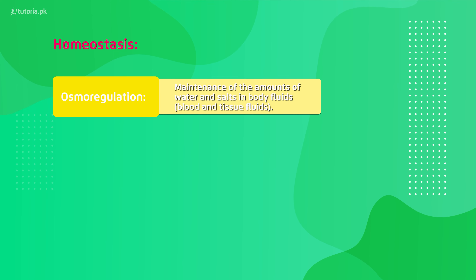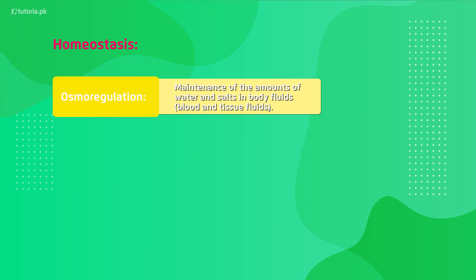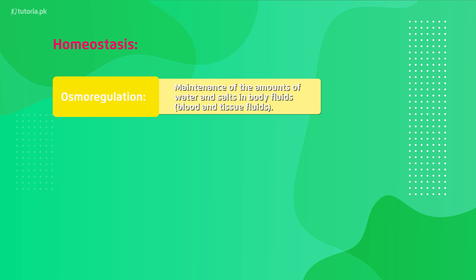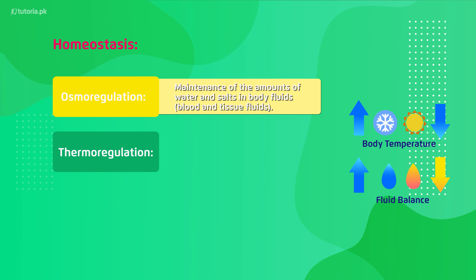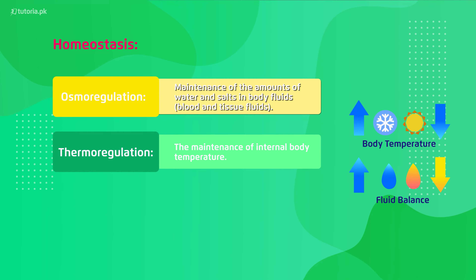Homeostasis works through different mechanisms. The first mechanism is osmoregulation. Osmoregulation means the maintenance of the amounts of water and salts in body fluids. That means the amount of water in your blood and tissue fluids is maintained so that it will not be more or less — the volume of blood is kept within range, and your tissue fluids are regulated as well.